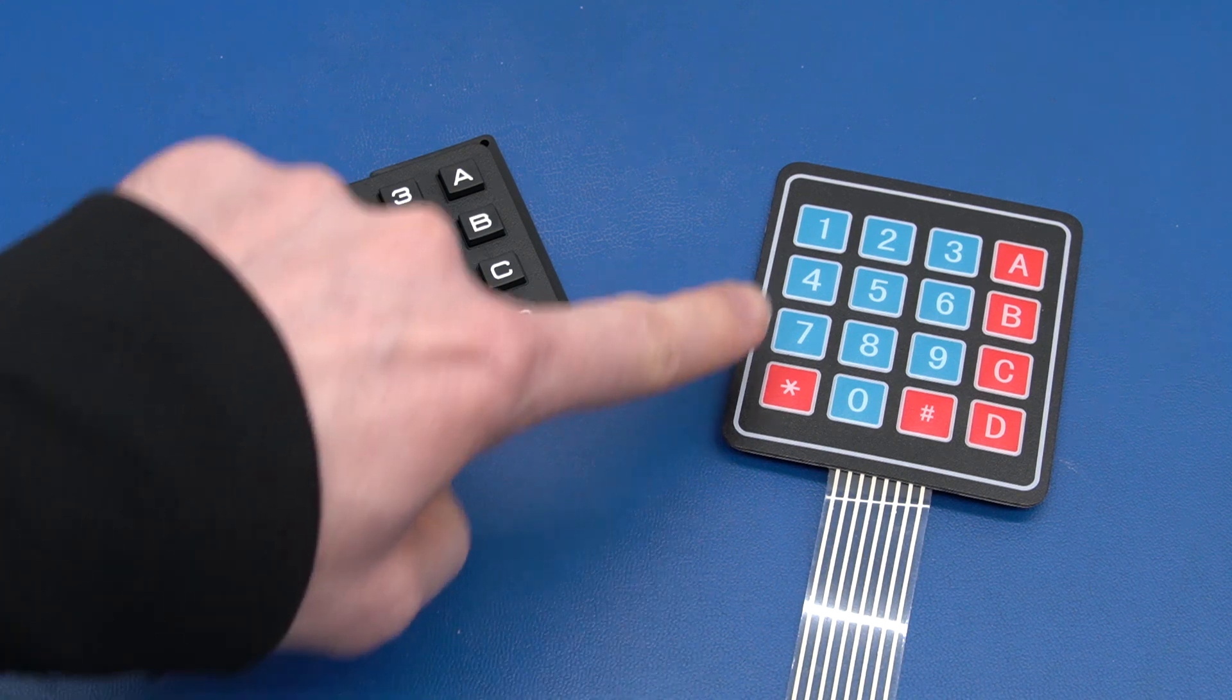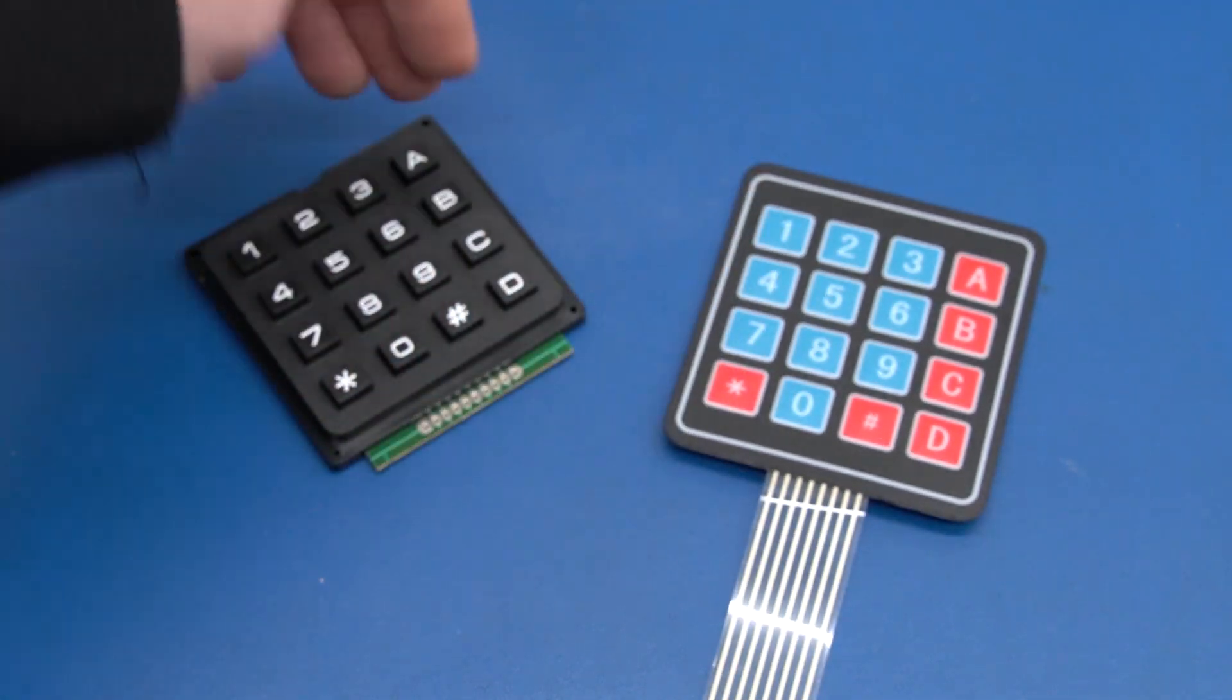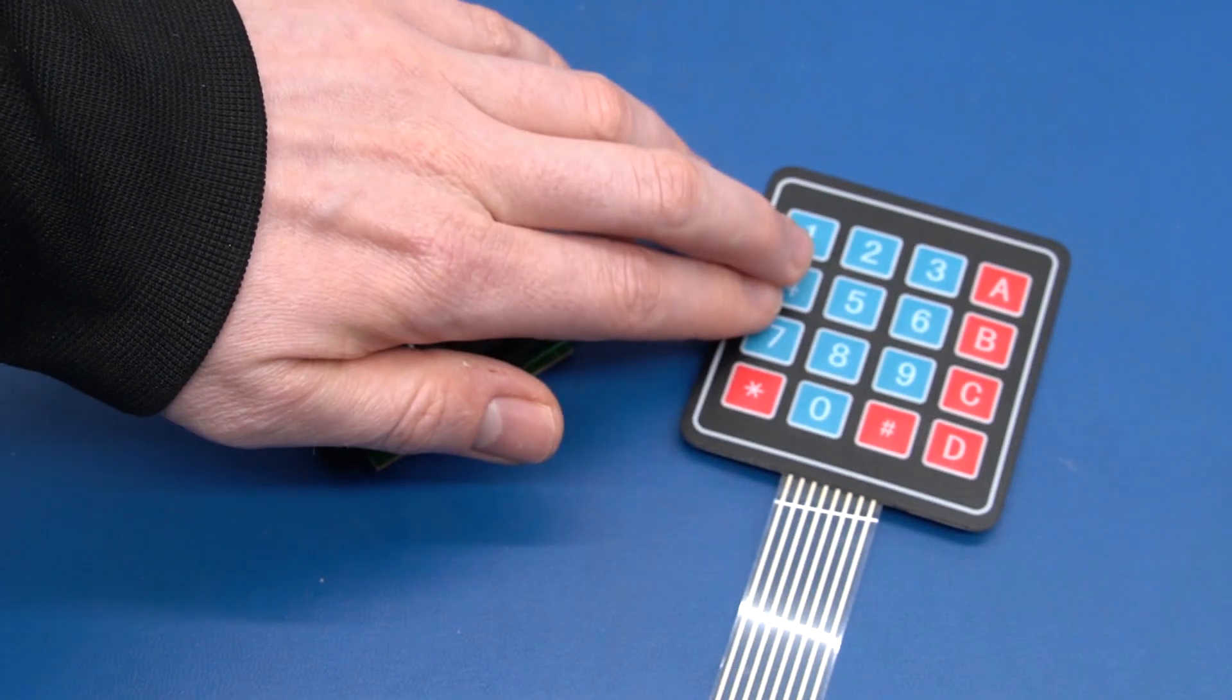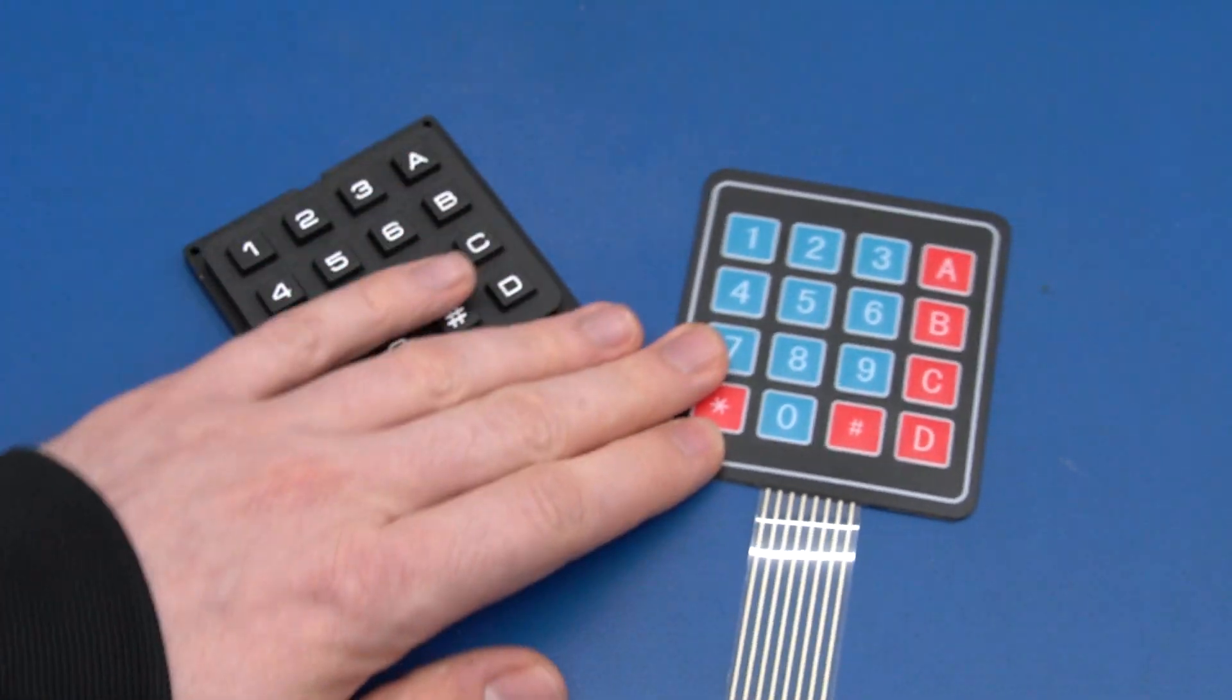It's only really good for pressing one button at a time, although you can actually press two and read it out as long as they are in the same row or in the same column.